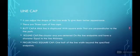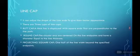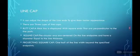Set the line width attributes. Line cap — it can adjust the shape of the line ends to give them a better appearance. There are three types of line caps. First, the butt cap: a thick line is displayed with square ends that are perpendicular to the line path. Round cap: circular arcs are centered on the line endpoints and have a diameter equal to the line thickness. Projecting square cap: one half of the line width beyond the specified endpoints.